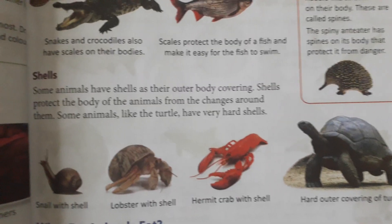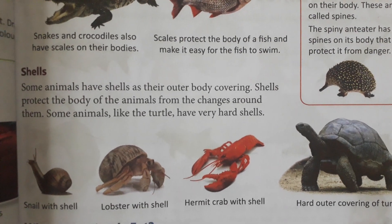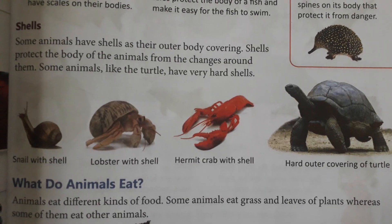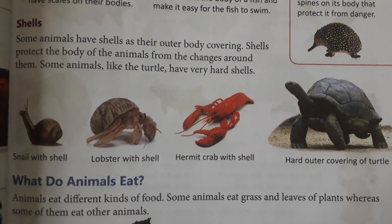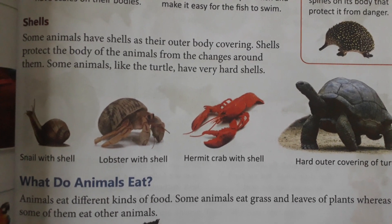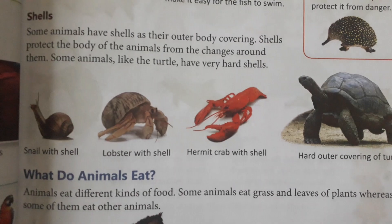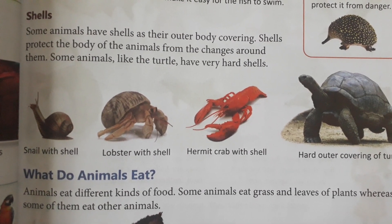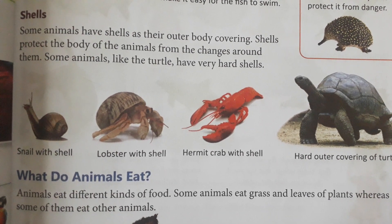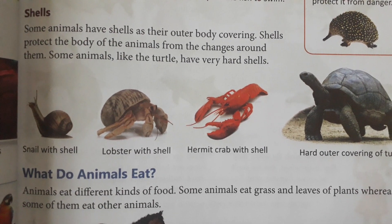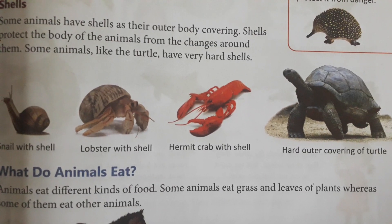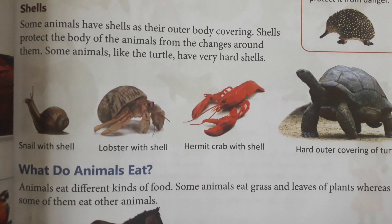Some animals have shells as their outer body covering. The shell protects them from the outside. The turtle has a hard shell. Other animals with shells include snail, lobster, and hermit crab. You can see so many examples of hard shell coverings in animals.